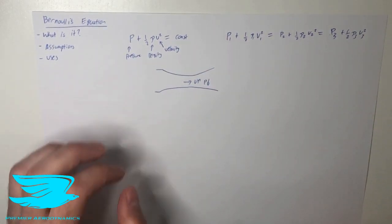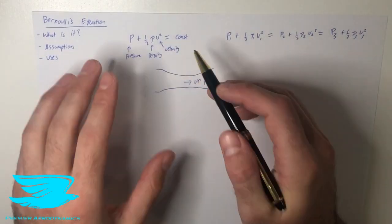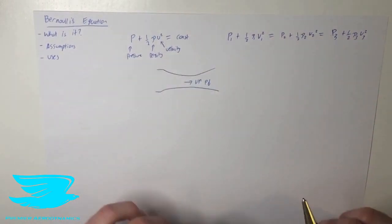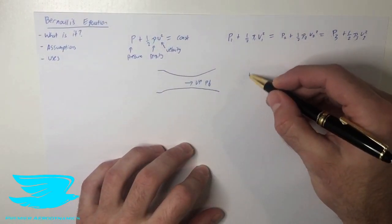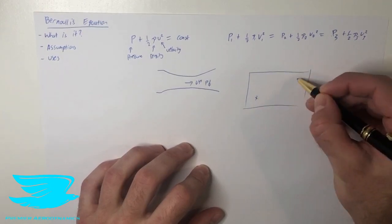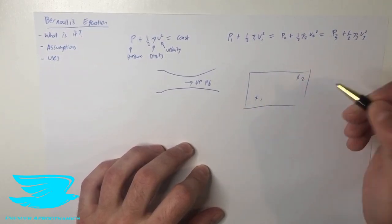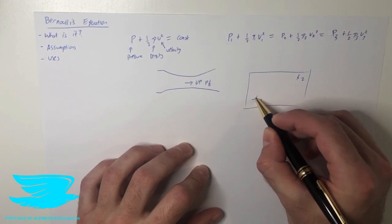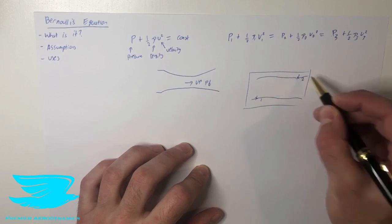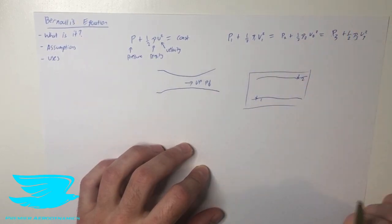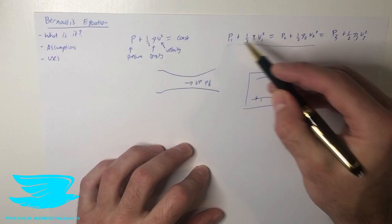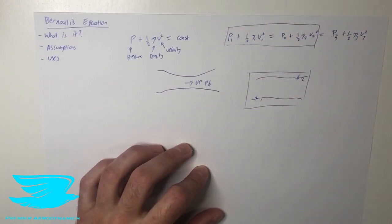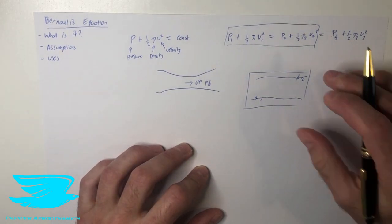Now, what are some assumptions? The first one is that for this particular case, we have to assume the flow is incompressible. Also important is how we apply this. If we have a general flow with two different points — point one and point two — and they are not connected by a streamline, so the streamline going through point one follows one path and the streamline from point two goes through a different path, they're two different streamlines. In order to relate P1 to P2 using this equation, we must have irrotational flow.